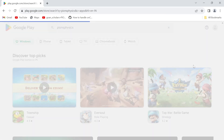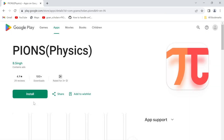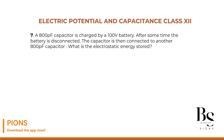An 800 picofarad capacitor is charged by a 100 volt battery. So there is a first capacitor C1 that is 800 picofarad. Pico means 10 to the power minus 12 — remember this, it is very commonly used with capacitors. So 800 picofarad charged by a 100 volt battery, meaning the voltage here is 100 volts.